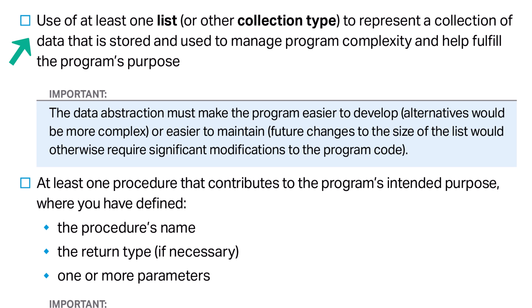Your program requires use of at least one list or other collection type to represent a collection of data that is stored and used to manage program complexity and help fulfill the program's purpose. Instead of list, I often use the term array, which is a specific type of list. It's not enough to have a list that stores data — you'll need to be able to explain a meaningful benefit to using the list instead of individual variables. In some cases, the program might not be possible without the use of a list. My sample program tracks the runs, outs, and innings in a baseball game, and records who scored each run so the user can look up the total runs scored by a given player.